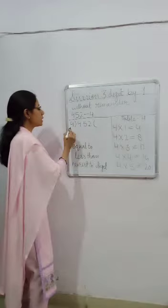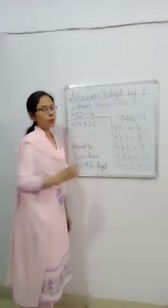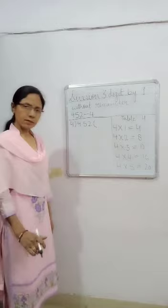Children, let me tell you this part is called divisor and this part is called dividend and whatever answer we got we write over here that is called quotient. Okay children, now let's see the next step.